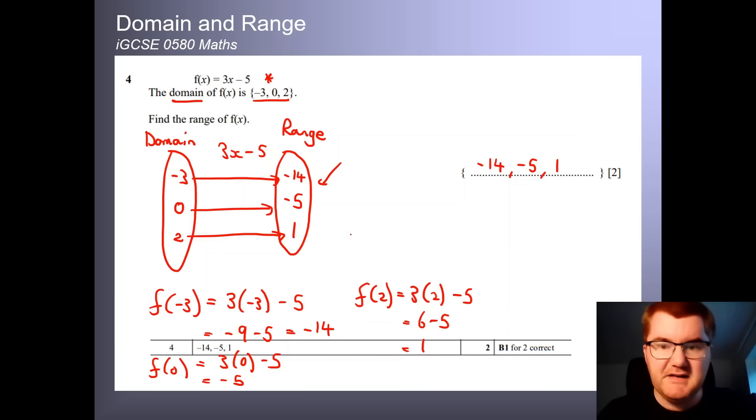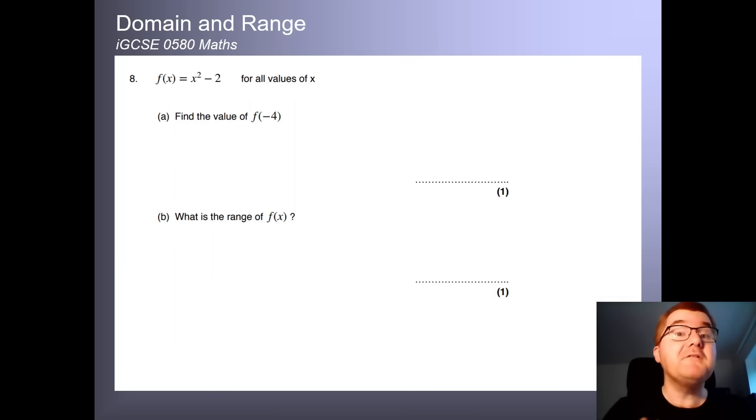I've used some Corbett Maths questions here to really help you understand exactly about domain and range. If you want to check out all the questions, then do click on the link in the description. Thank you, Corbett Maths, for these questions. So we have a function here, x squared minus 2. Find the value of f of minus 4. Wherever I see an x, I put a minus 4. Again, just basic question to practice quickly. Remember, minus 4 all squared is equal to 16. Minus 2. And that gives us then 14.